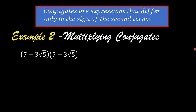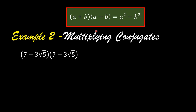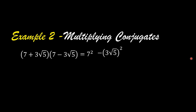To multiply these two binomial radical expressions, we can use the FOIL method, or we can use the pattern: A plus B times A minus B is equal to A squared minus B squared. So we have 7 squared minus the square of the second term. 7 squared is equal to 49. Then 3 squared is 9, and the square root of 25 is 5.